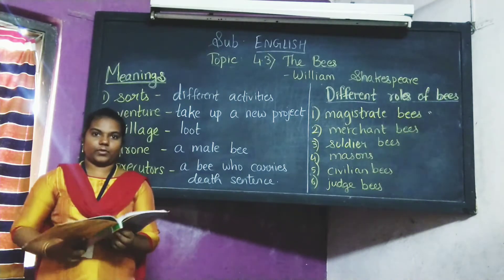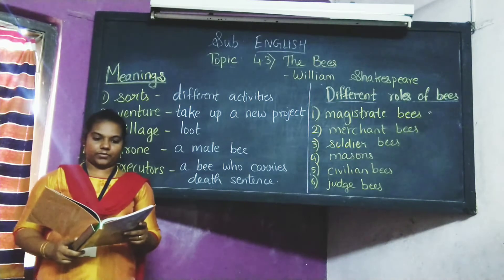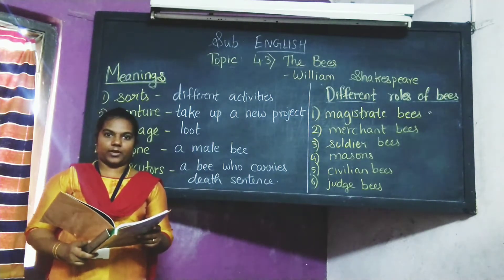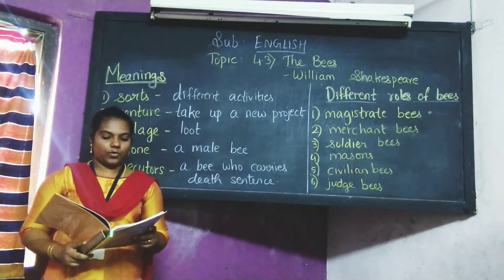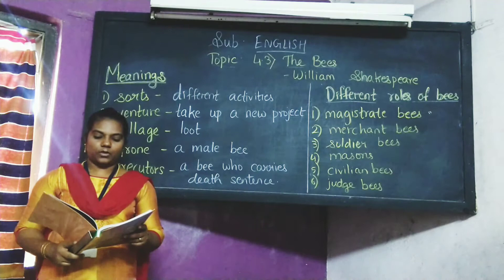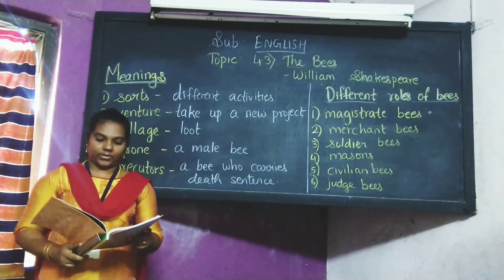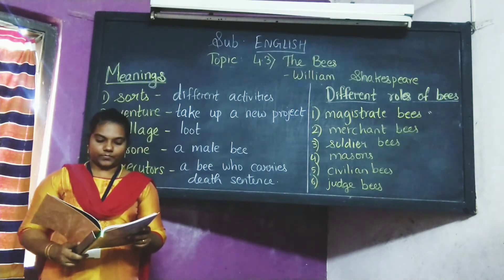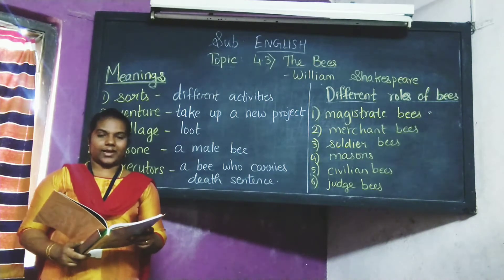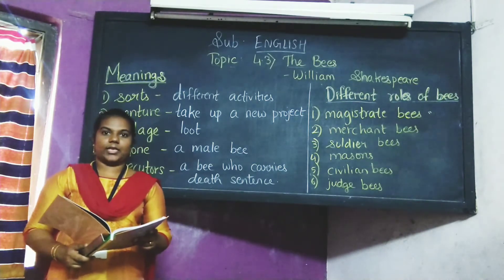Now students, we will again recite the poem — 4.3, The Wings, written by William Shakespeare. So work the honeybees, creatures that by rule in nature teach the art of order to a people's kingdom. They have a king and officers of sorts, where some like magistrates correct at home, others like merchants venture trade abroad, others like soldiers armed with their stings make boot upon the summer's velvet buds. Which village they with merry march bring home to the royal tent of their emperor, who busied in his majesty's service. The singing masons building roofs of gold, the civil citizens kneading of the honey. The poor mechanic porters crowding in their heavy burdens at the narrow gate. The sad-eyed justice with his surly hum, delivering over to executor's pale the lazy yawning drone.